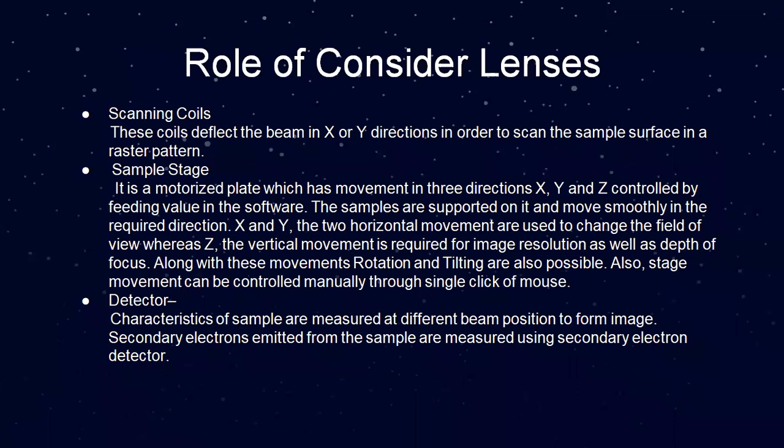Next, I will explain the roles of scanning coils, sample stage, and detector. First, scanning coils: these coils deflect the beam in the x or y direction in order to scan the sample surface in a raster pattern. Second, sample stage: it is a motorized plate with movement in three directions — x, y, and z — controlled by input values. The samples are placed on it and move in the required x and y directions; the two horizontal movements change the field of view, while z (vertical movement) is required for image resolution and depth of focus. Rotation and tilting are also possible, and stage movement can be controlled manually with a single click of the mouse. Third, detector: characteristics of the sample are measured at different beam positions to form an image. Secondary electrons emitted from the sample are measured using the secondary electron detector.